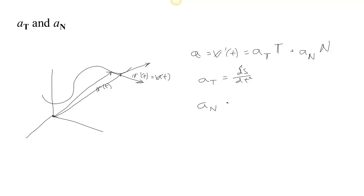We'll also find that a sub N has a relationship to the curvature as well as ds/dt. So we'll find that a sub N is actually equal to the curvature κ times (ds/dt)².